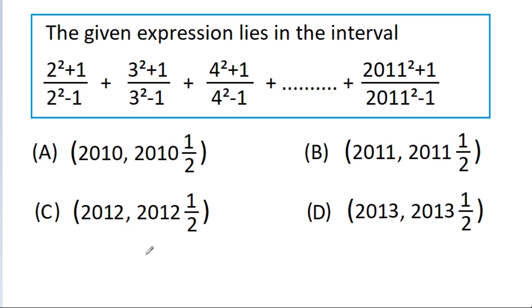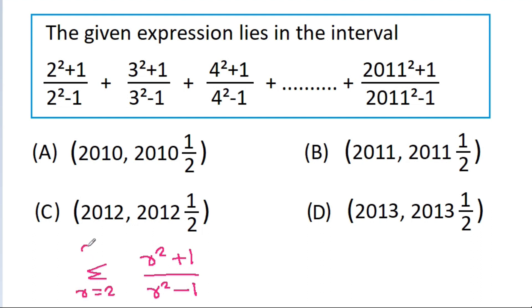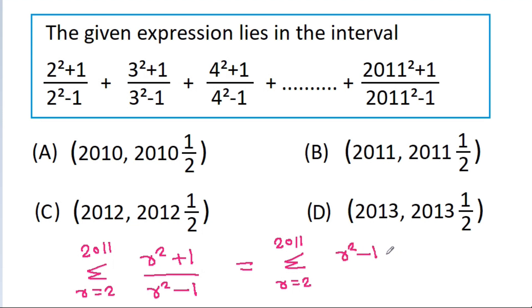So, any general term of the expression is (r²+1) / (r²-1), and we have to find the summation from r=2 to 2011. It is equal to the summation from r=2 to 2011, where r²+1 can be written as (r²-1)+2, divided by (r²-1).